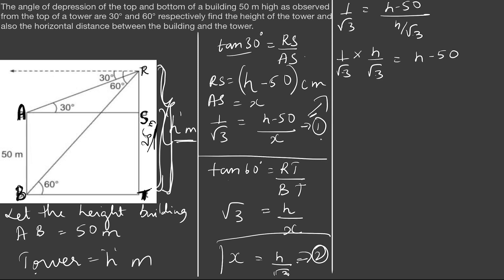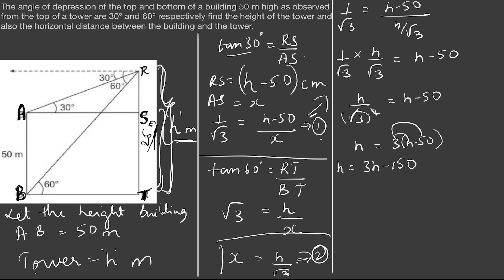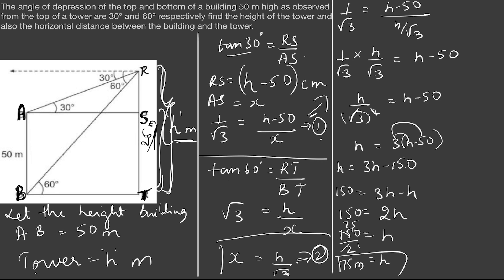That gives h/3 = h − 50, since (1/√3) × (h/√3) = h/(√3)² = h/3. Multiplying through: h = 3(h − 50), so h = 3h − 150. Taking h to the right side: 150 = 3h − h = 2h, therefore h = 150/2 = 75 meters. The height of the tower is 75 meters.